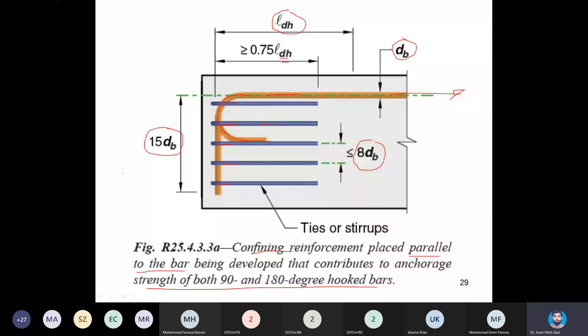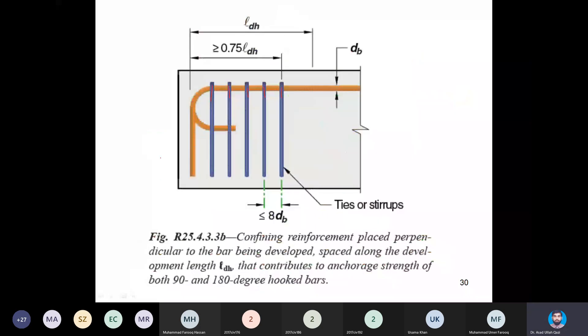This is the first sketch which I will refer to when I will discuss the paragraph on slide number 28. And the second picture which I will again refer to - it is again the confining reinforcement placed perpendicular to the bar being developed, spaced along the development length LDH that contributes to anchorage strength of 90 and 180 degree hooked bars.